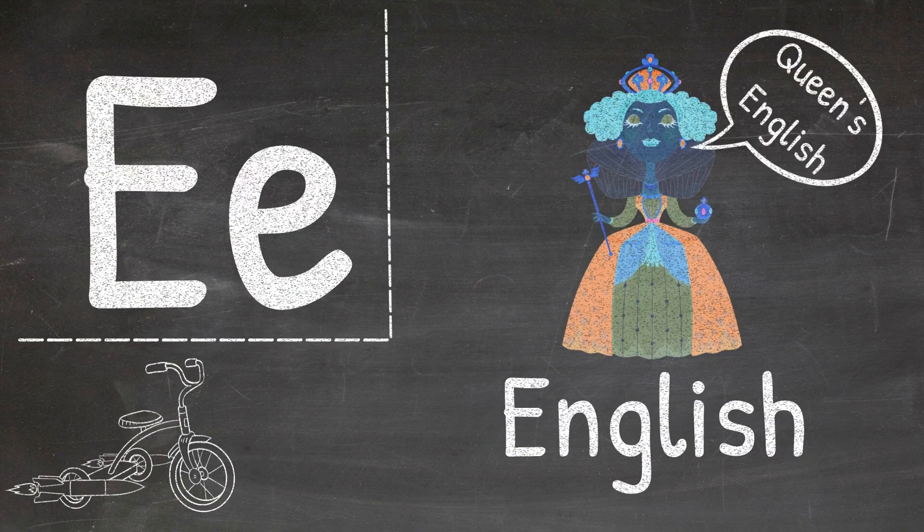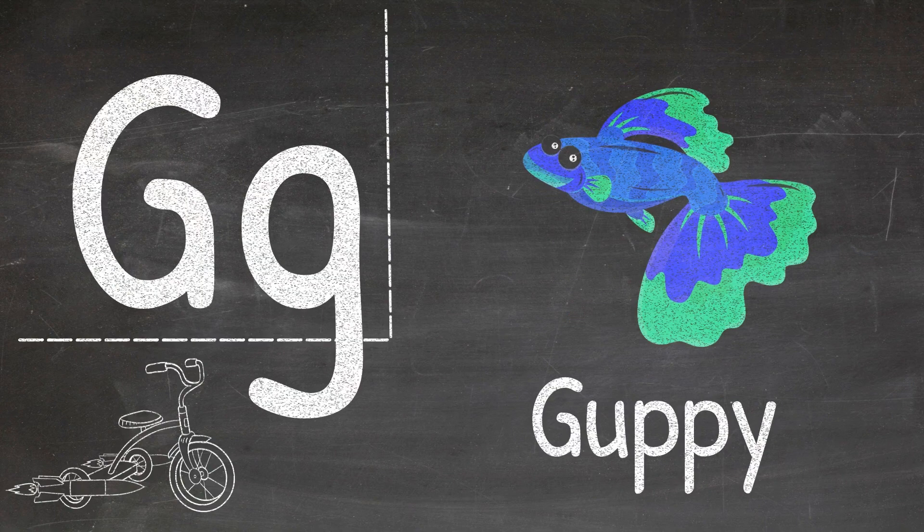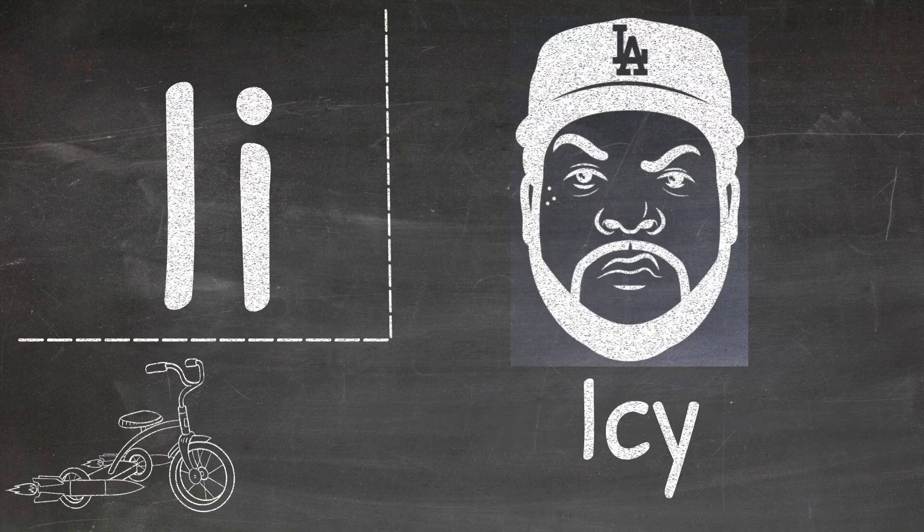E is for english, F is for froggy, G is for guppy, H is for hydrometeorology.